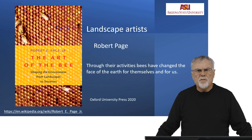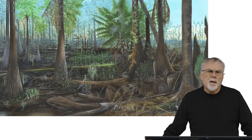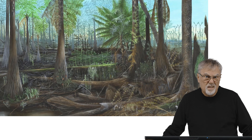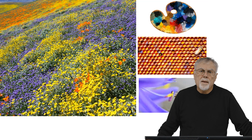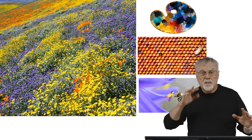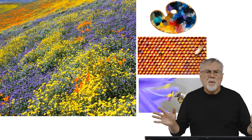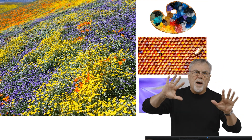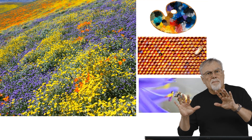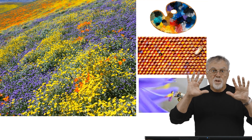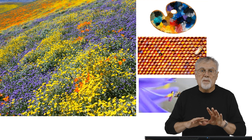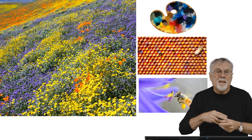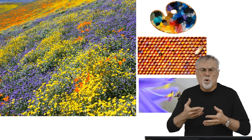Through their activities, bees have changed the face of the earth for themselves and for us. If you went back about 300 million years ago, this is what the earth would look like — green and brown and boring. Today, when we go out and look at the landscapes, we see a kaleidoscope of color, something like patches of color splashed onto a painter's palette. But the pigments used for painting the landscape are not those of an artist, but the pollen that plants produce and use bees to distribute. And the bee, of course, is the painter.